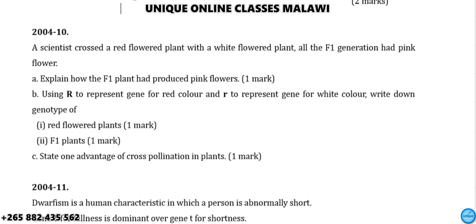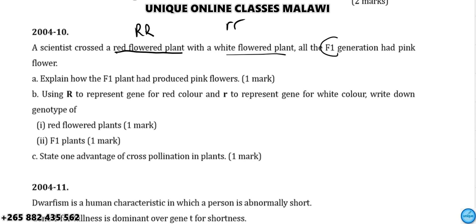For question number 10, I will now explain. If one plant had reduced the pink flowers — pink flowers don't produce when a pure plant is crossed — you get white ones. Those who are not dominant are recessive. So we have a situation involving incomplete dominance.